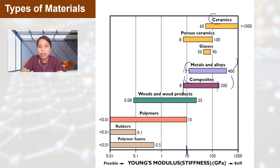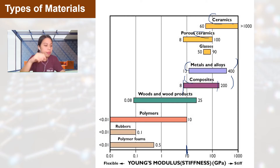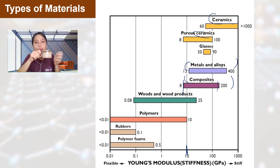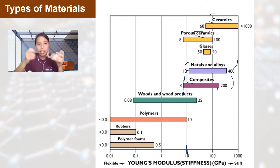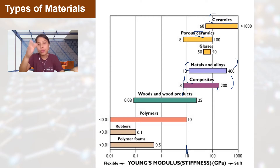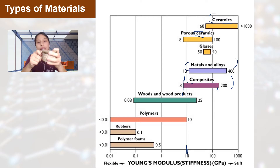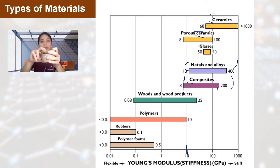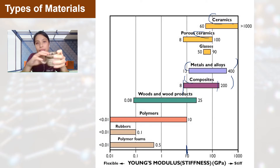If you look up here — ceramics. What are ceramics? They're like those cup things, your ramen bowls — things that will drop and go 'piang.' Those ceramics, glasses, they're really high up on the chart, they're very stiff. You can't easily bend a cup, and if you do bend it, you've already broken it.